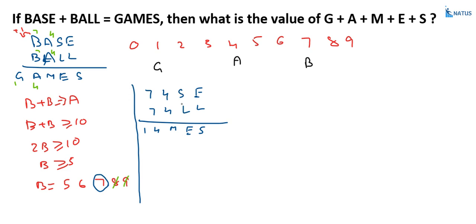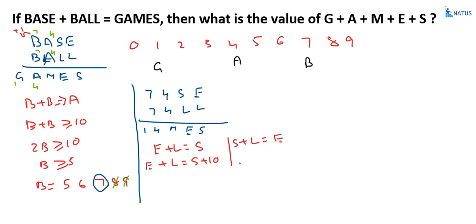Now consider the units column. Either E plus L equals S, or E plus L equals S plus 10 with a carry. And for the tens column: either S plus L equals E, or S plus L equals E plus 10 with a carry.